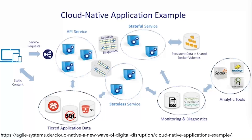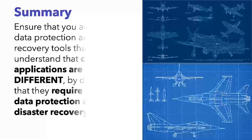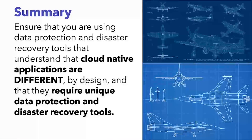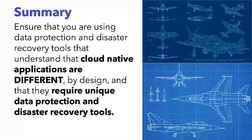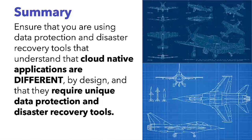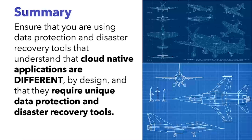A cloud native application might be distributed across many microservices: API services, application data, stateless and stateful services, persistent data in shared Docker volumes, analytics tools, and monitoring and diagnostics tools — all within a single application, with multiple pods per service providing scalability and availability. Because pods are typically stateless, you need application images ready along with the state of the Kubernetes architecture so pods can be spun up by the scheduler in a deployment or replica set.